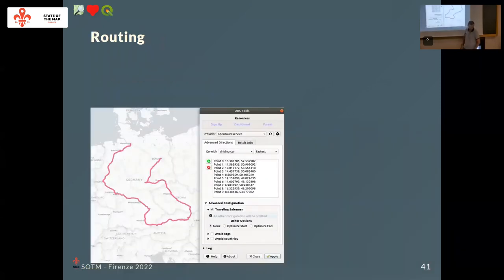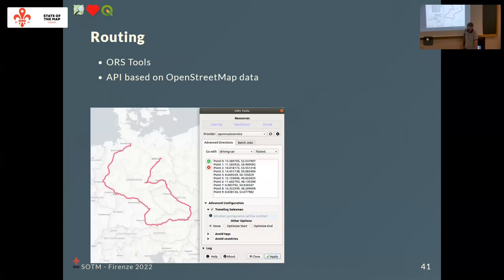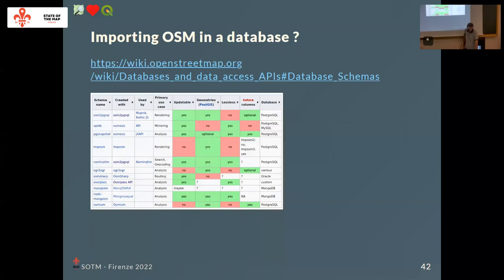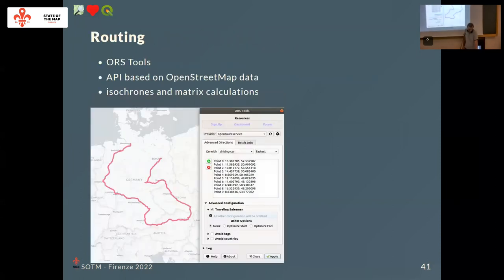If you want to do some routing, there is a plugin called ORS Tools — it uses an online API called OpenRouteService, which is based on OpenStreetMap data. With this plugin you can do isochrones, matrix calculations, and routing.